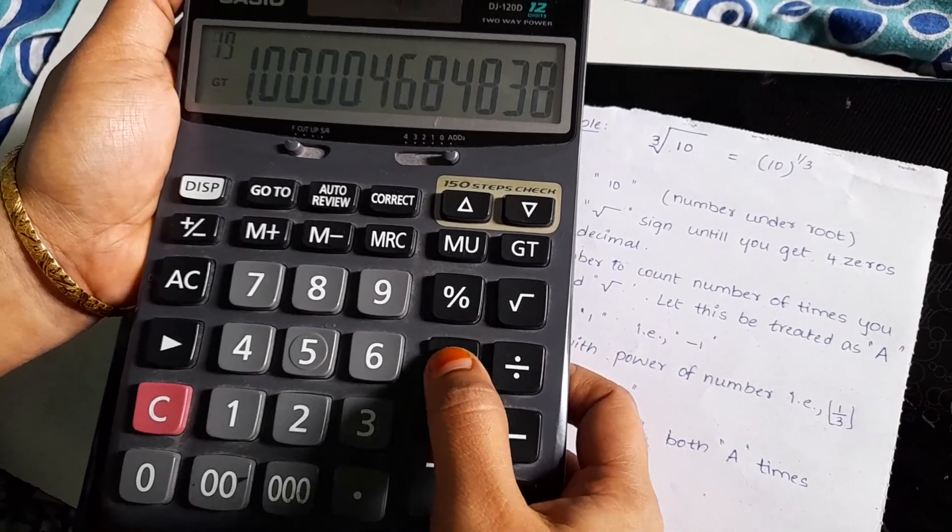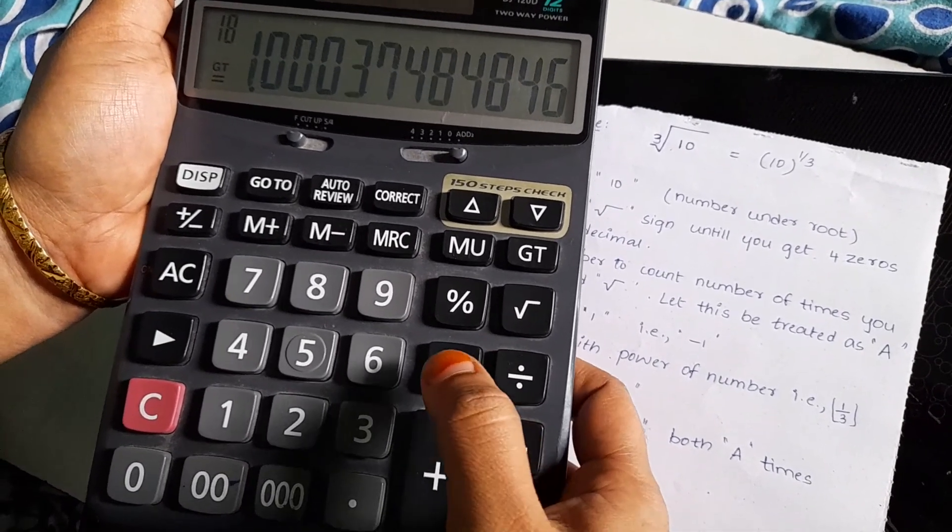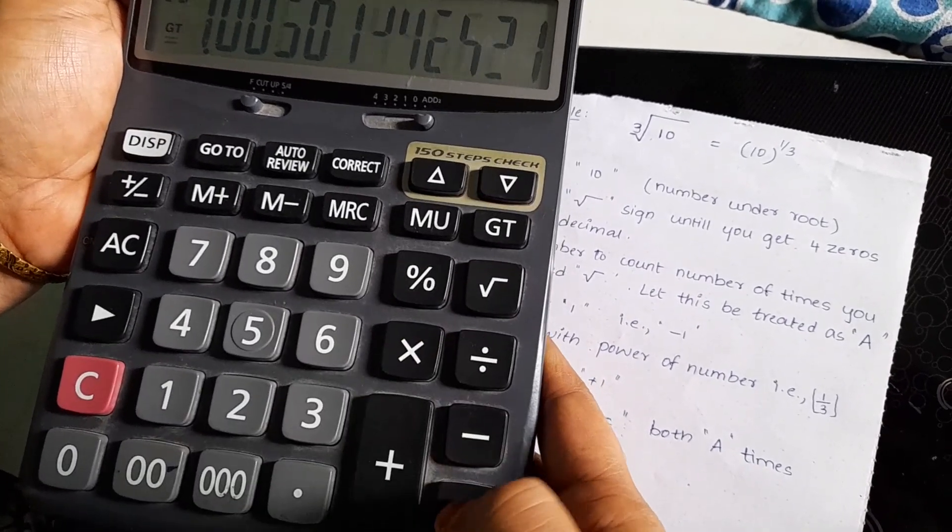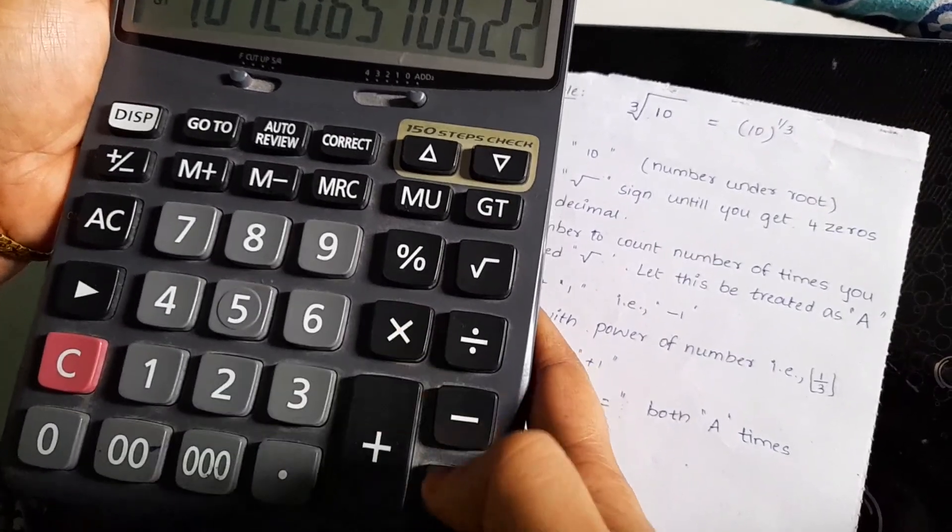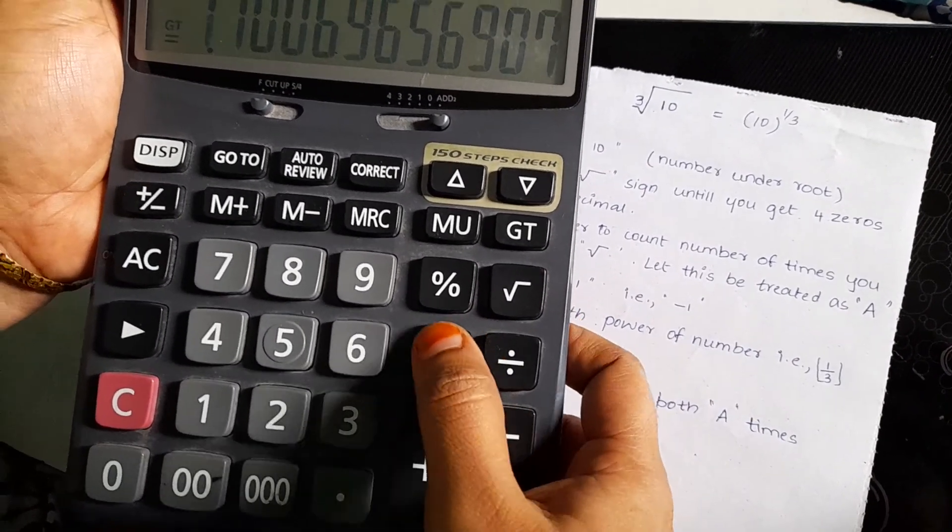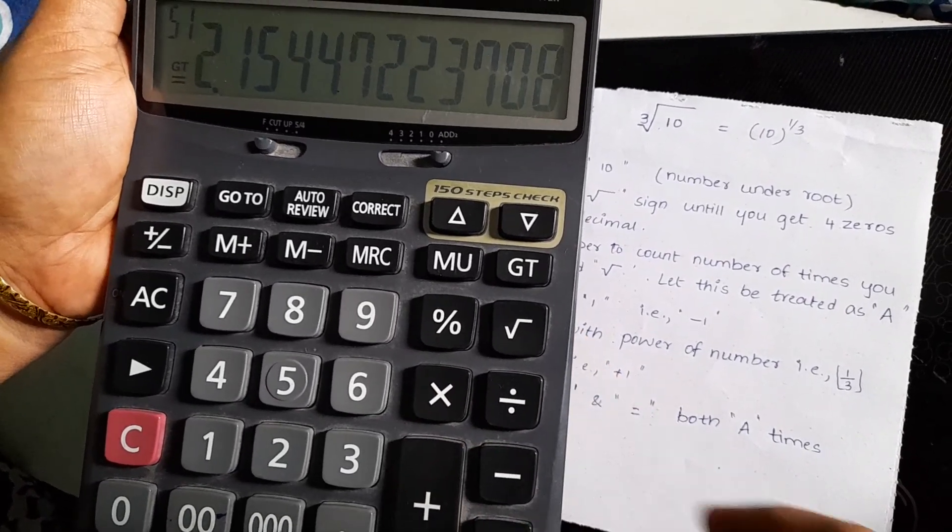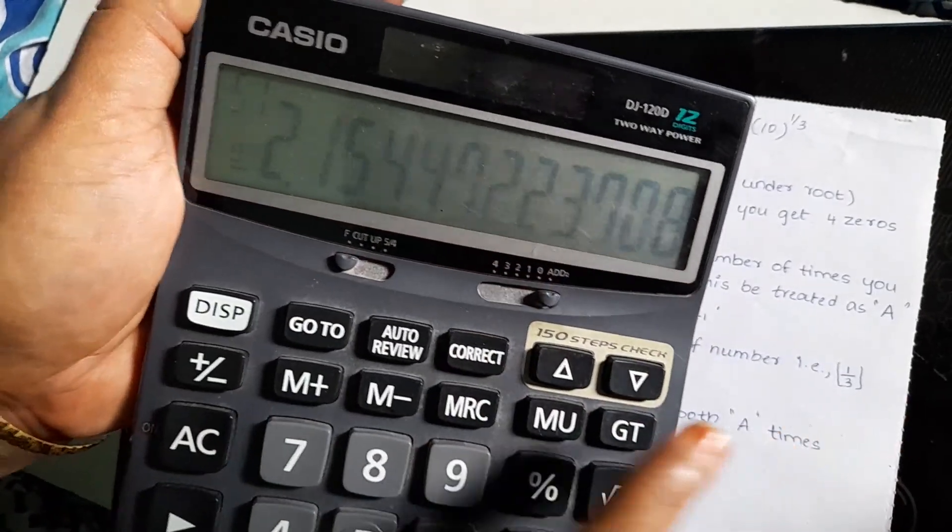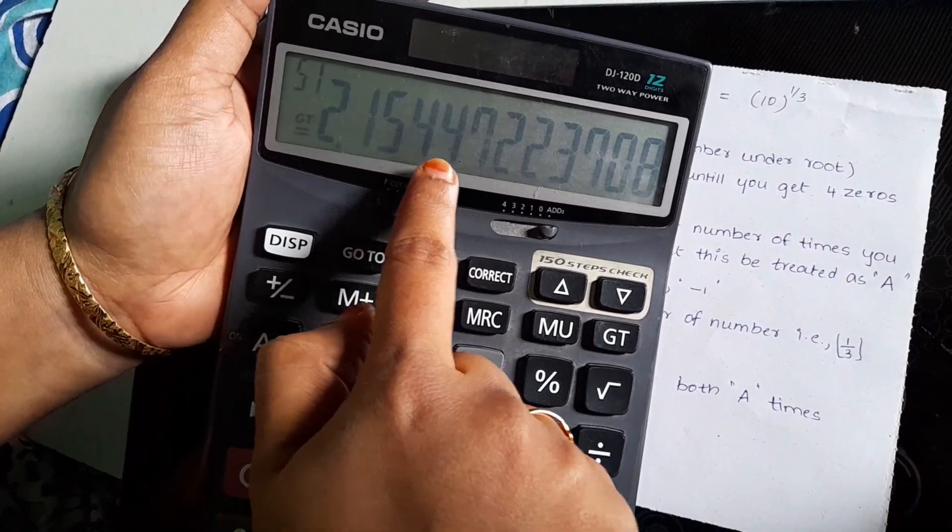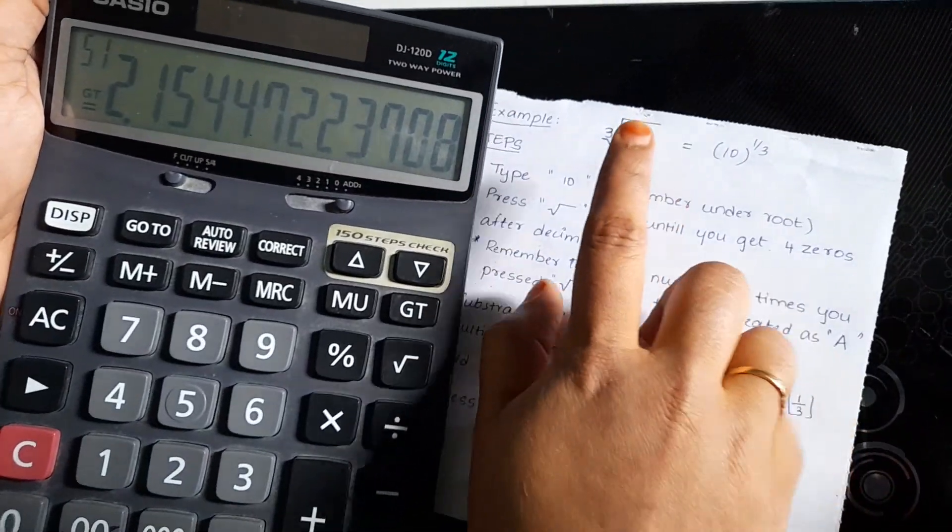1, 2, 3, 4, 5, 6, 7, 8, 9, 10, 11, 12, 13, 14, 15. So, I pressed 15 times and I got the result as 2.15447. This is the cubed root of 10.